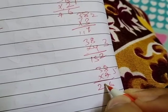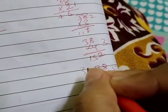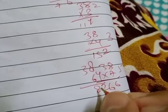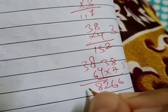So 38 into 6: 6 8s are 48, carry 4, 6 3s are 18, 19, 20, 21, 22. We get 228, which is near to 229. Yes, we can take 6 times.